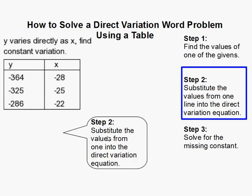So here this says substitute the values from one into the direct variation equation. What this means is these are the values that I picked. So those are the ones I'm going to use. You can use any of the given values as long as you're consistent.